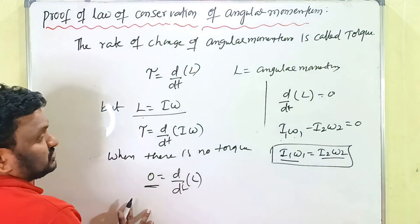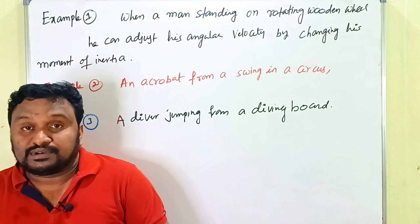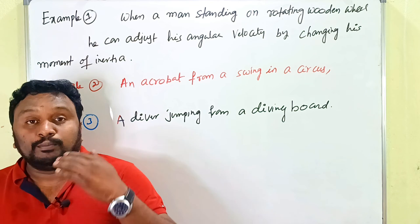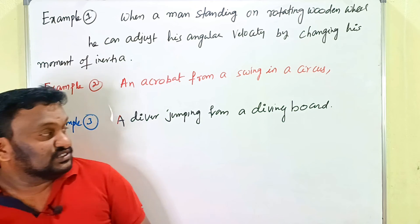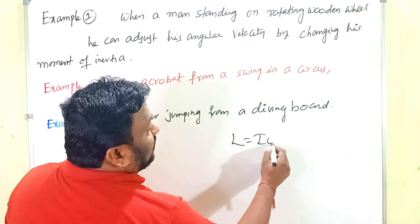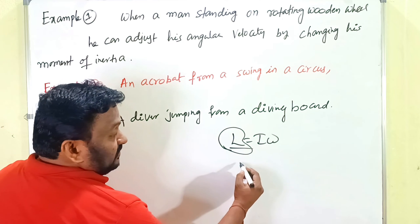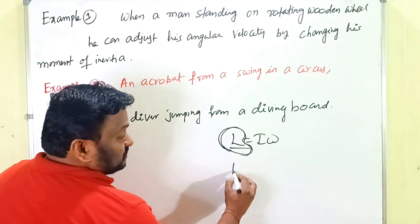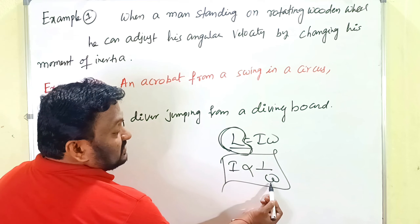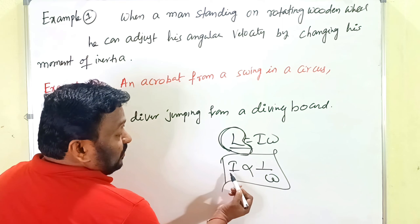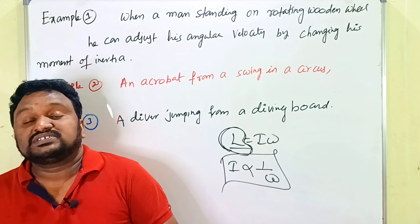Now let's discuss the daily life examples and applications. First, let's understand the relationship between moment of inertia and angular velocity. Since L = Iω and L is constant according to the law of conservation of angular momentum, I is inversely proportional to ω. When moment of inertia is more, angular velocity is less; when moment of inertia is less, angular velocity is more.